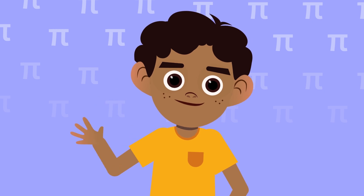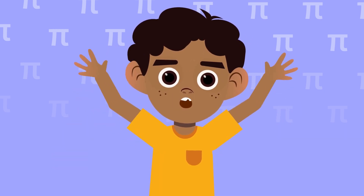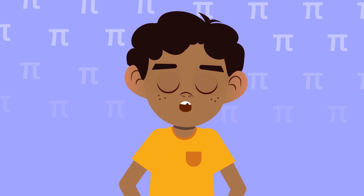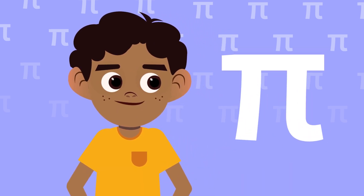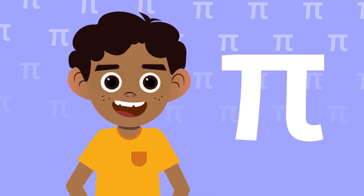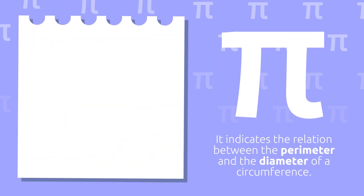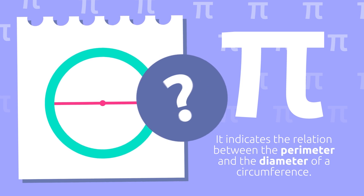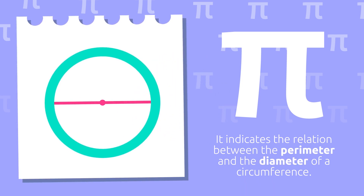Hello friends! Today we'd like to introduce a very famous number found in all circumferences and circles you see around you — it's number pi. Number pi is a mathematical constant which indicates the relation between the perimeter and the diameter of a circumference. But how can we describe this relation?